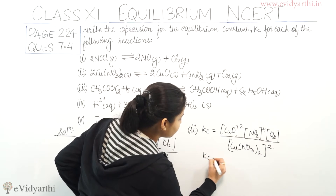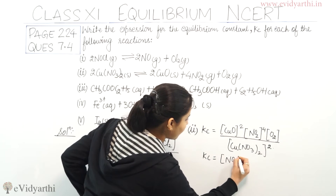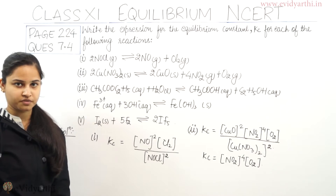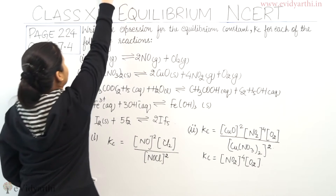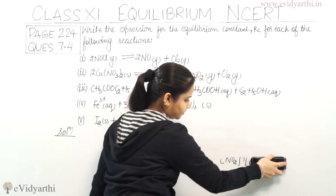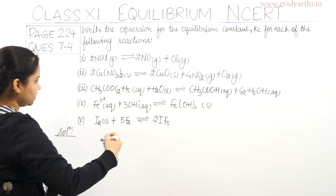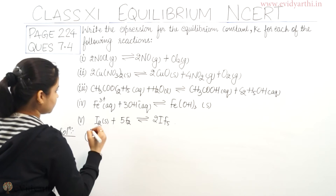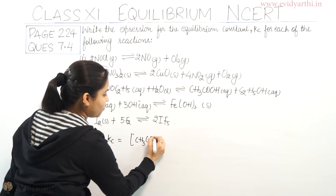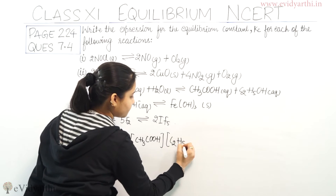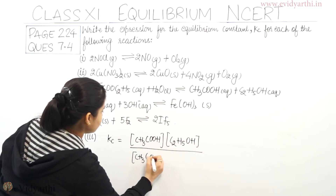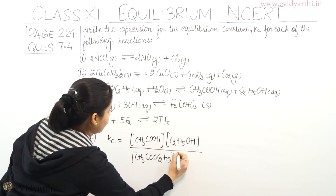Therefore, Kc for the second reaction becomes [NO₂]⁴ × [O₂]. This is the equilibrium constant for the second part of the reaction. Now moving on to the third part of the question. Kc for the third reaction equals [CH₃COOH] × [C₂H₅OH] divided by [CH₃COOC₂H₅] × [H₂O].